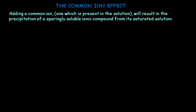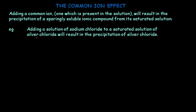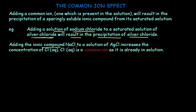Let's understand what this means. Suppose we have a saturated solution of silver chloride. Silver chloride is a sparingly soluble ionic compound, and if it precipitates, it gives white colour precipitates. Now, to a saturated solution of silver chloride, if we add a solution of sodium chloride, then silver chloride will precipitate out as white colour precipitates. This is because NaCl has a common ion — the chloride ion — with silver chloride.